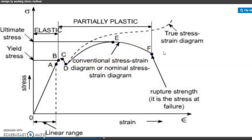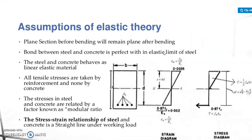Then we discuss the assumptions of elastic theory. The assumptions we consider for the balanced section are: plane sections before bending will remain plane after bending; the bond between steel and concrete is perfect within the elastic limit of steel; steel and concrete behave as linear elastic materials; and all tensile stresses are taken by reinforcement and not by concrete.